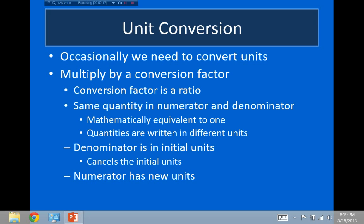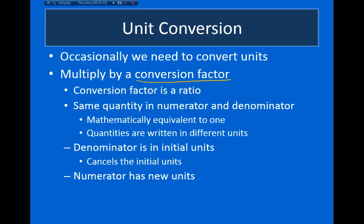The way you convert between different types of units is you use something called a conversion factor. A conversion factor is basically just a ratio, and what we do is we put the same quantity of something in the numerator and the denominator. Because of this, the conversion factor is mathematically equivalent to multiplying by one. We write the quantities in the numerator and denominator using different units, choosing the units in the denominator to match the units we initially started with. This way, they'll cancel with the initial units, and we'll place the new units in the numerator.